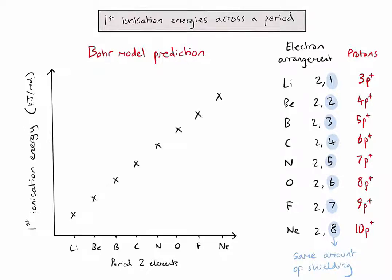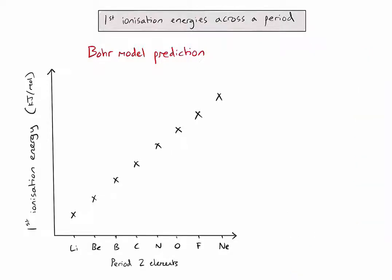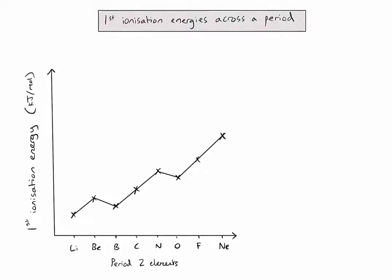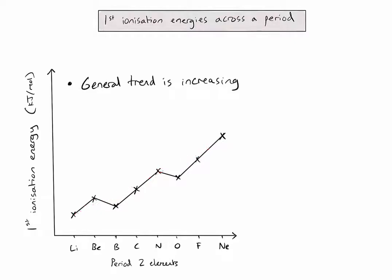The general trend of increasing ionization energy is true of actual experimental data, but there are some exceptions that need to be explained. The actual first ionization energy data shows the general trend is still increasing, but to explain the two exceptions, we'll use the atomic orbital model and electron configurations.